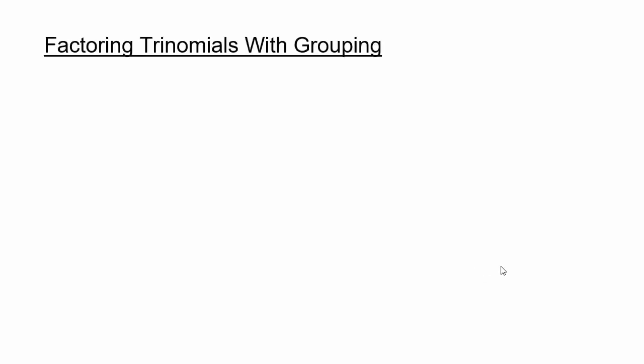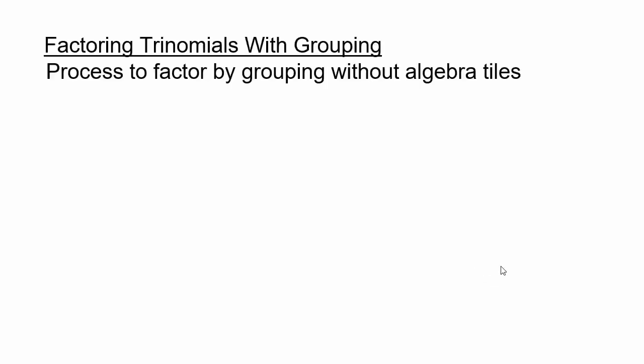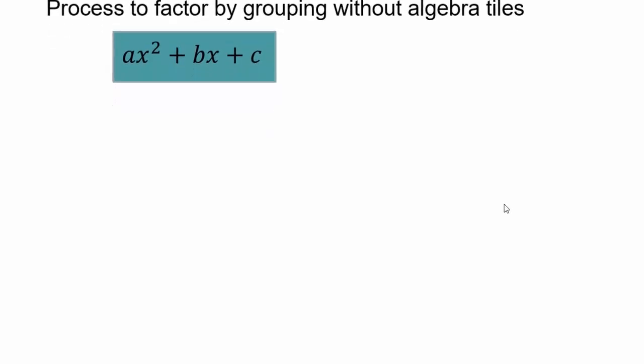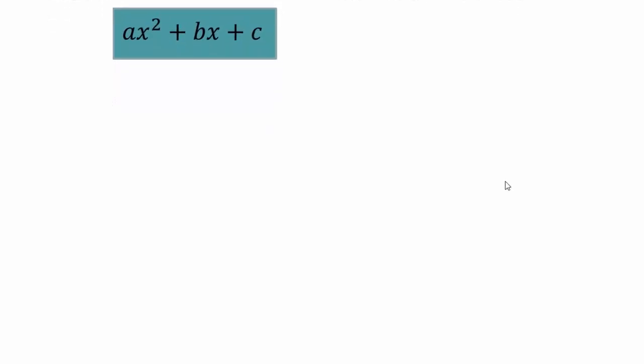Let's solidify our understanding of the process on how to use the factor by grouping method to factor polynomials of the type ax squared plus bx plus c. First, you have to write it with the square term first, then the x term, then the c term.